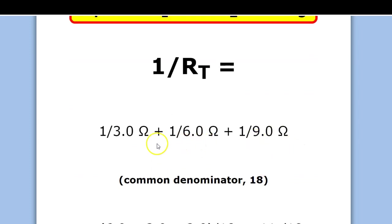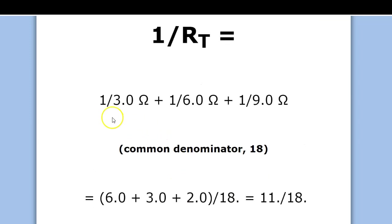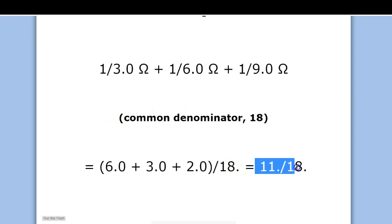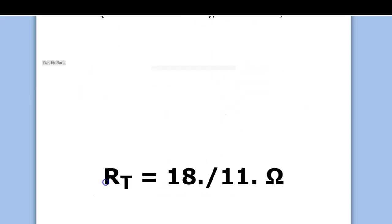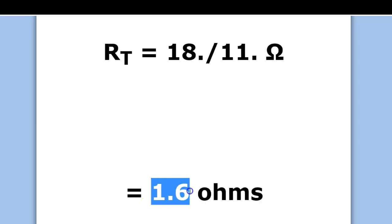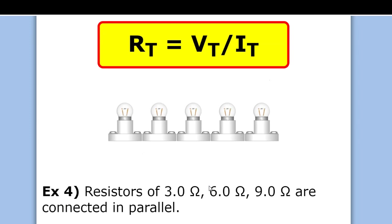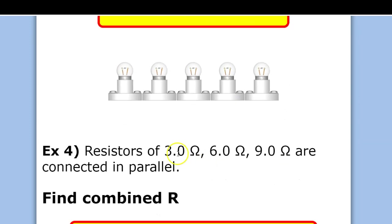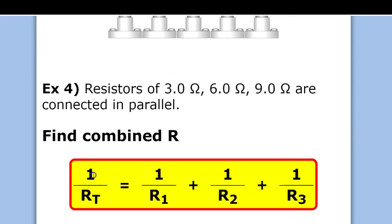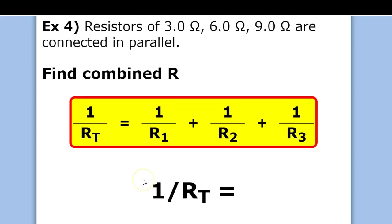The common denominator of 9, 6, and 3 is 18. So this would be 6 over 18 plus 3 over 18 plus 2 over 18. We get 1 over RT equals 11 over 18, but we're not done because that's what 1 over RT equals. So when we flip it, we get 18 over 11, which we can leave as a decimal. Sometimes we only know the resistance values and have to use this more difficult equation from the reference table. Remember to flip the fraction at the end.